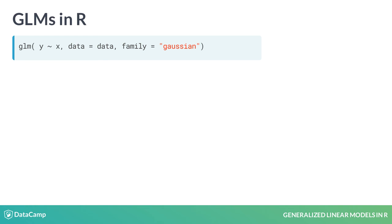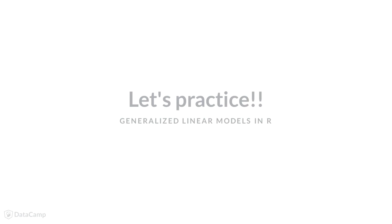GLMs are fit with the function GLM. Like LMs, GLMs have formulas and data as input, but also have a family input. The Gaussian family is how R refers to the normal distribution and is a default for a GLM. Also, if the family is Gaussian, then a GLM is the same as an LM. Now that you've seen a little bit about GLMs, let's